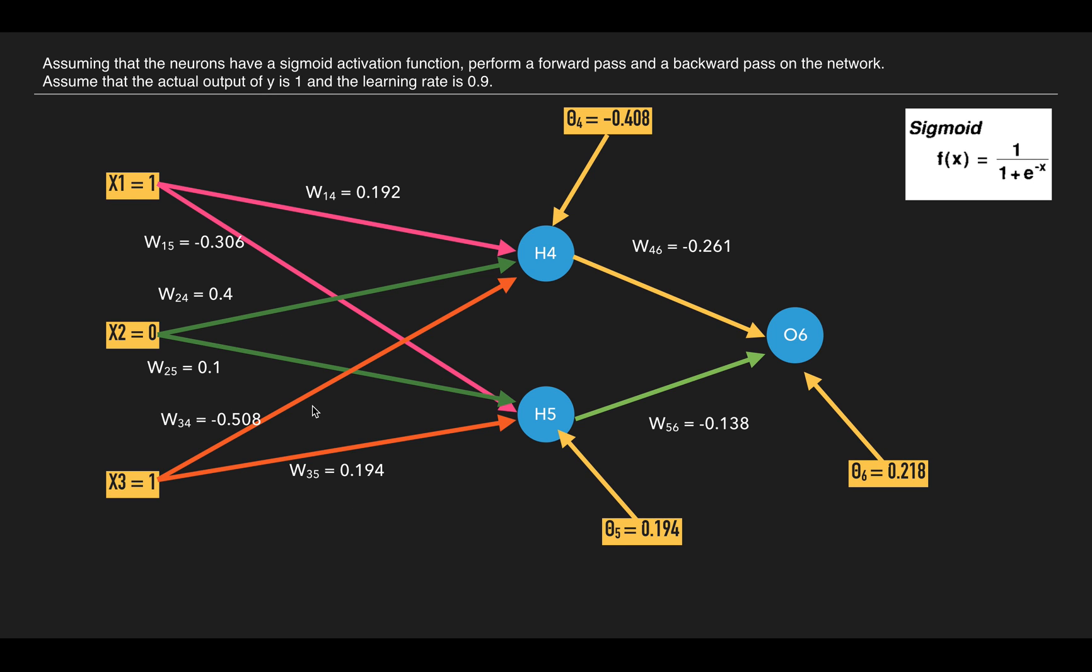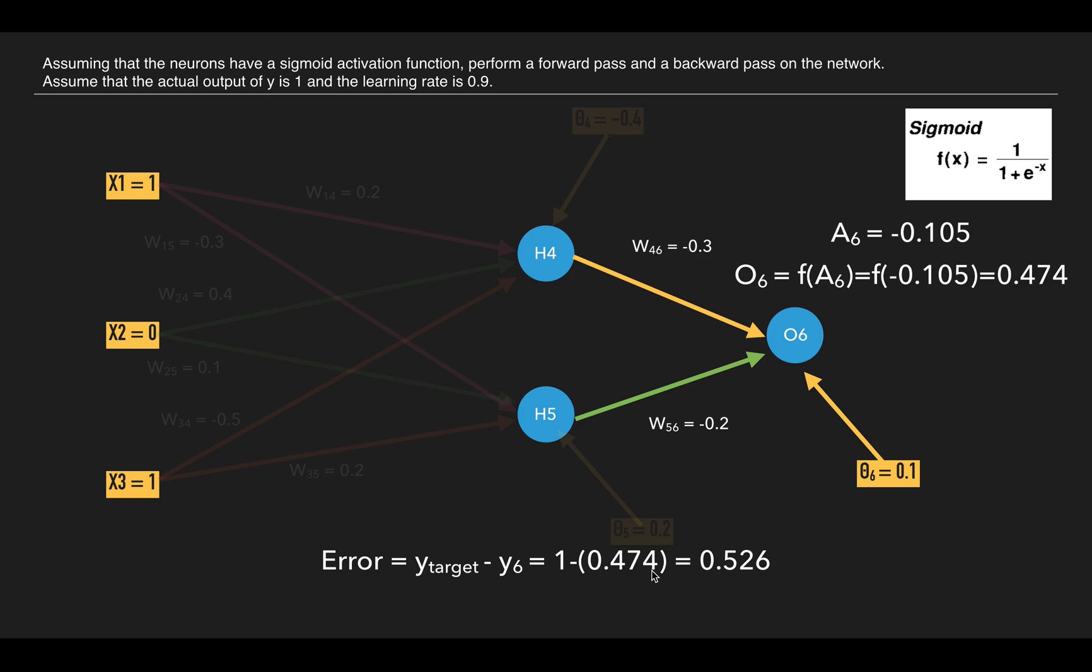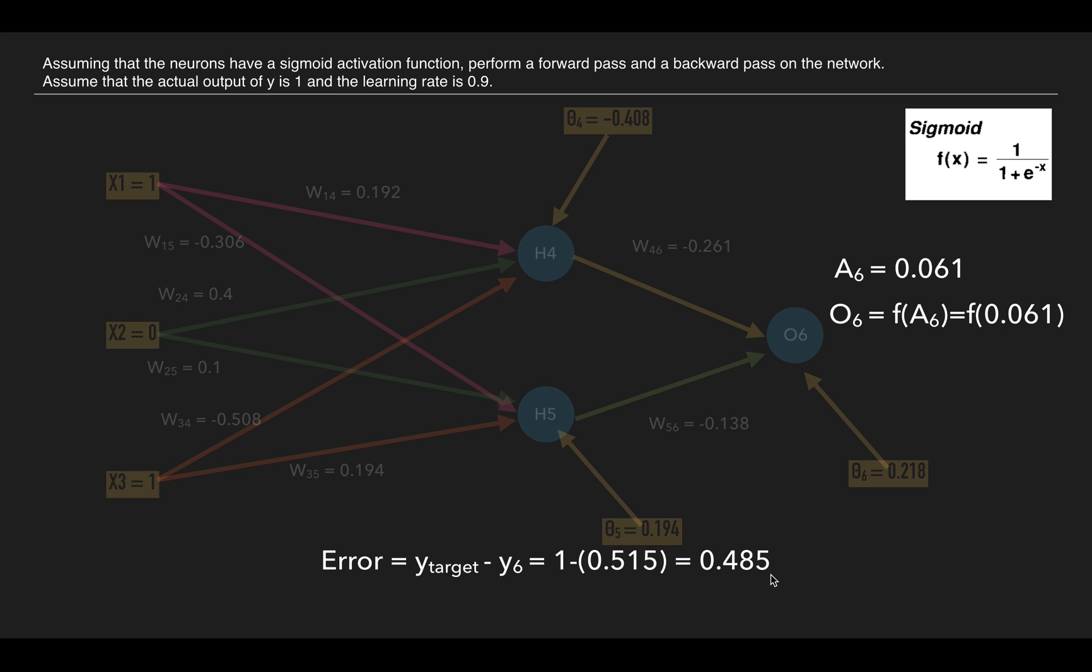After that, let us perform a forward pass again and see what happens. So like I have shown you previously, we will calculate it and we get these outputs. We will get at the 6th node the value as 0.061. After passing it to the sigmoid function, we will get the value as 0.515. So previously we got the value as 0.474, so it is improved, and the error is 0.485.